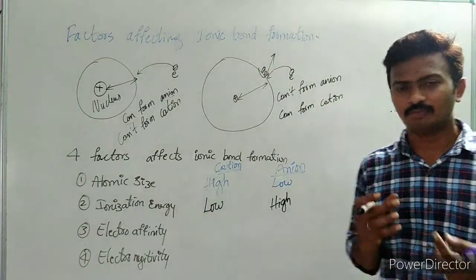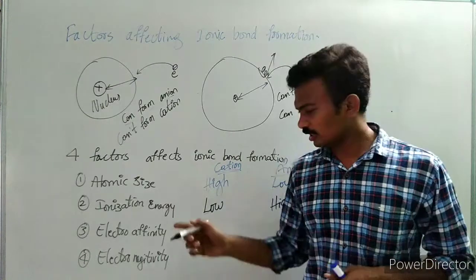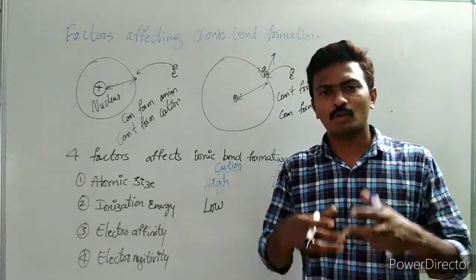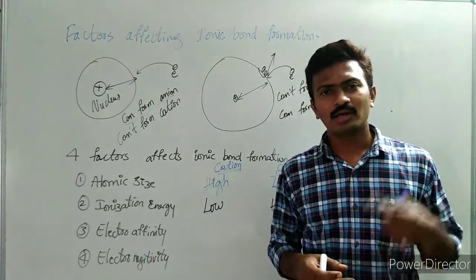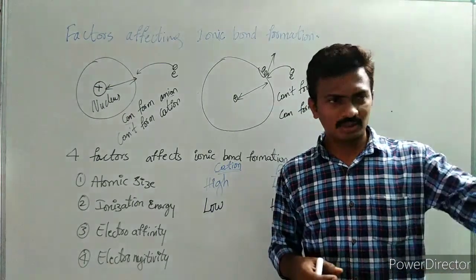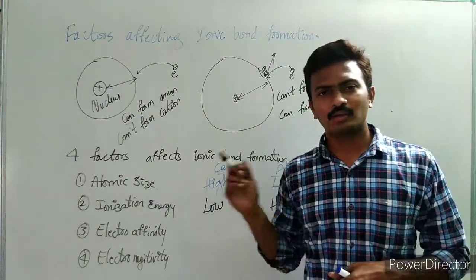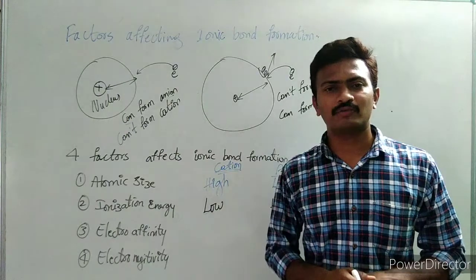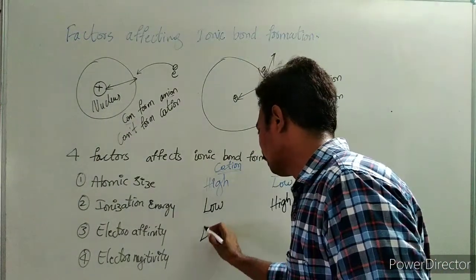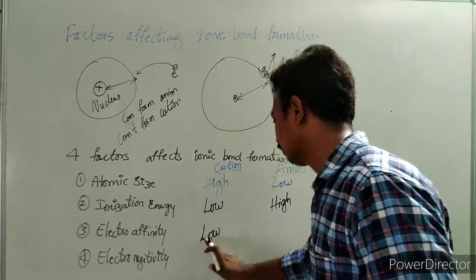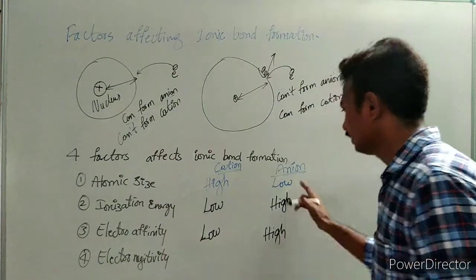Next, electron affinity — the affection towards the incoming electron. If an atom has more affection towards an incoming electron, it will form an anion, as it is more eager to gain the electron. So, atoms with low electron affinity will form cations, while atoms with high electron affinity will form anions.